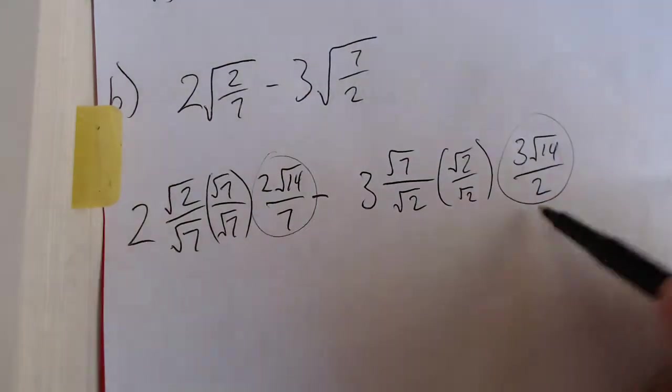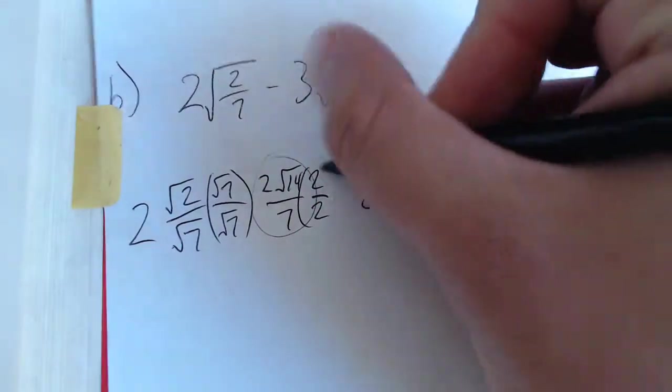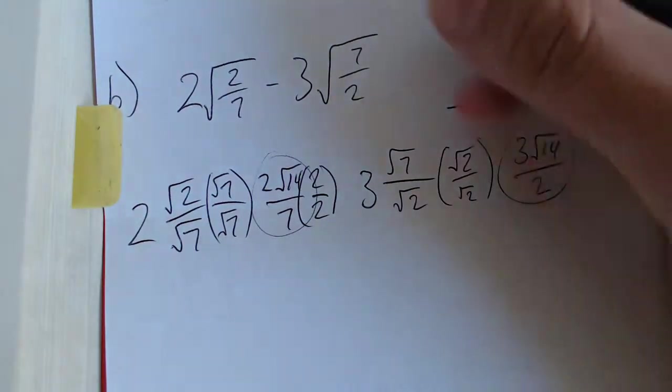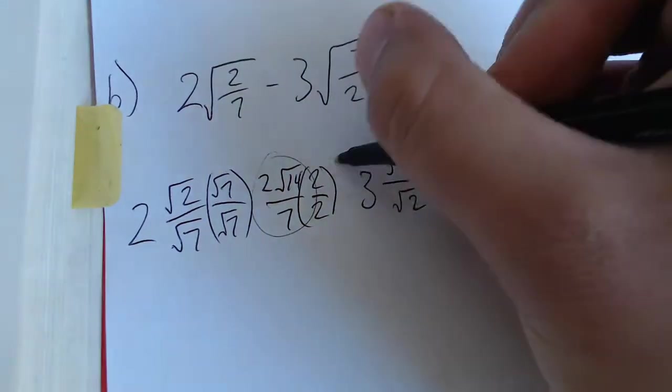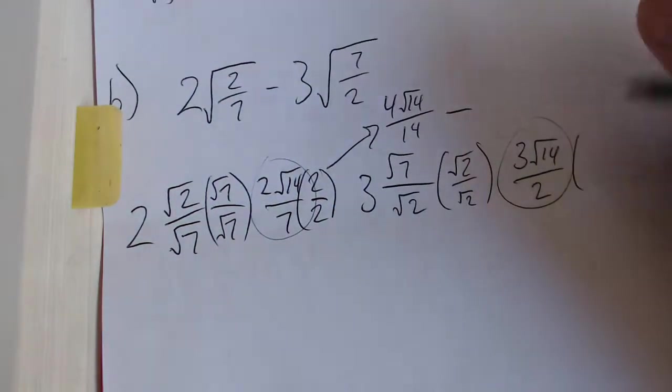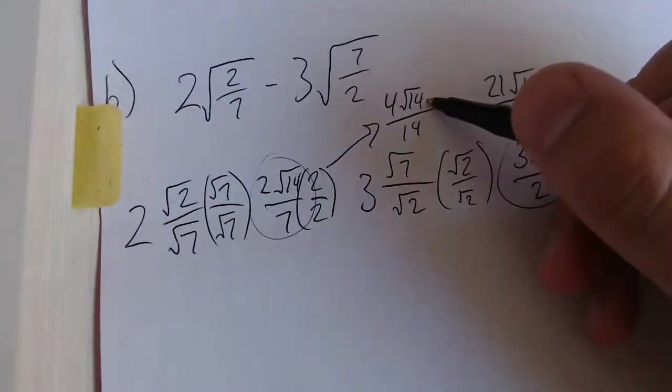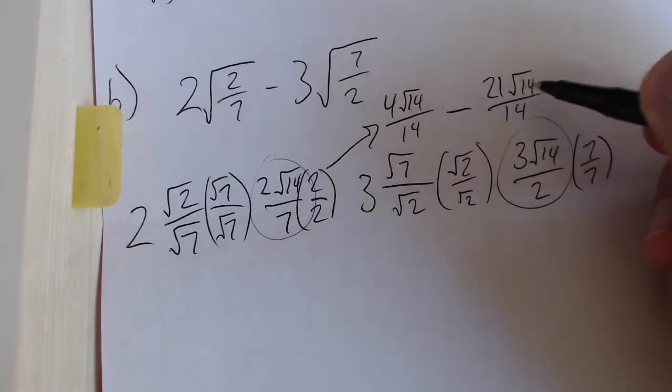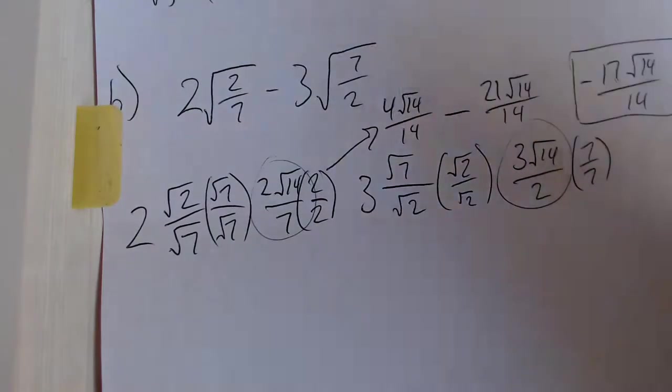Here, we get 3 times root 14 over 2. So now we've got this number minus this number. And again, we just have to do common denominators. So 2 times root 14 over 7 is going to get multiplied by 2 over 2, and that's going to give us 4 times root 14 over 14. So taking that, putting it up here, not forgetting our minus sign. Here, we're going to multiply this one by 7 over 7, and that's going to give us 21 times root 14 over 14. From here, again, we have like terms. 4 plus negative 21 is going to give us negative 17 times square root of 14 over 14. And that is our final answer.